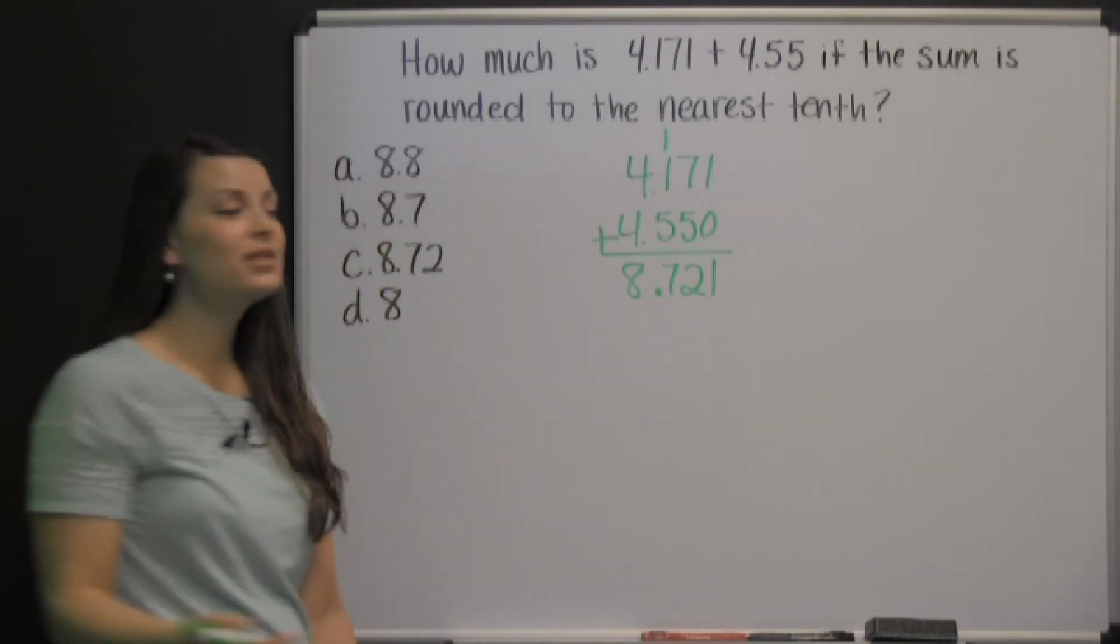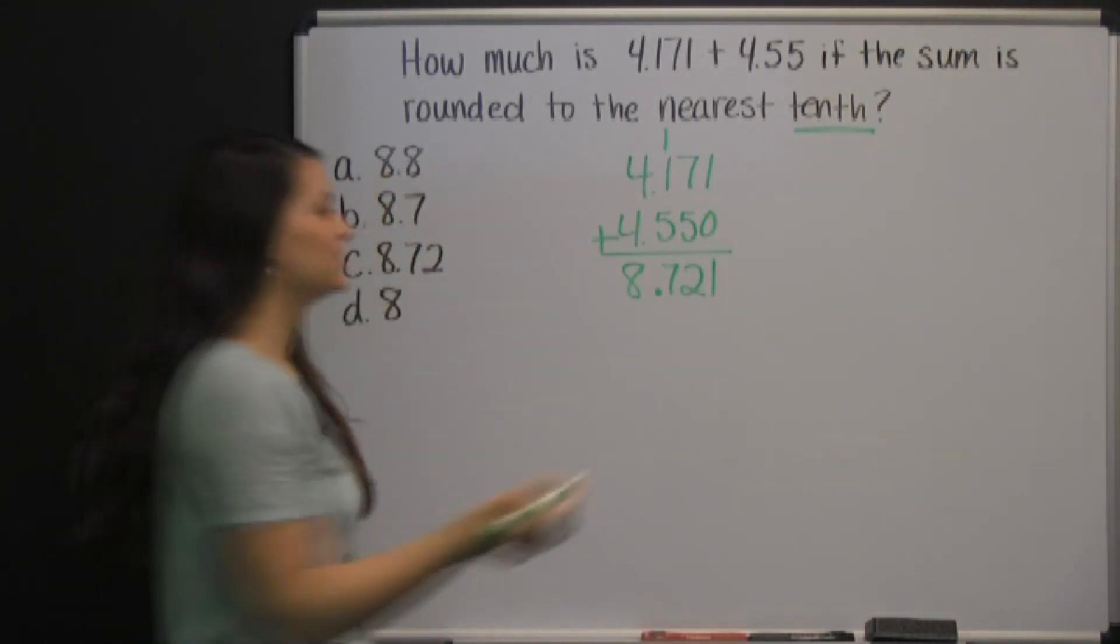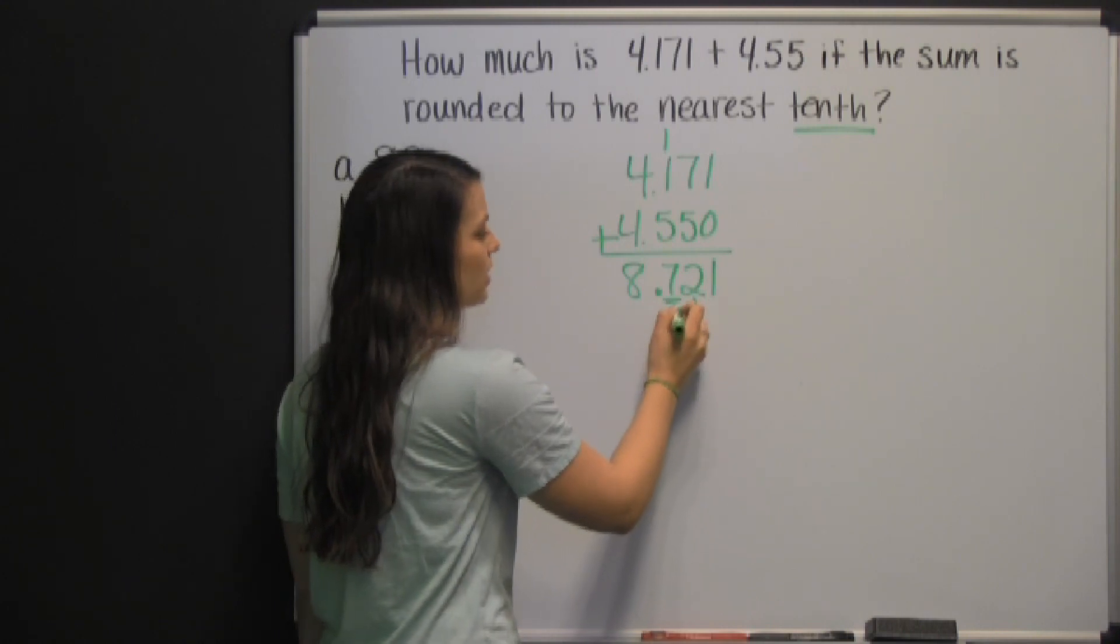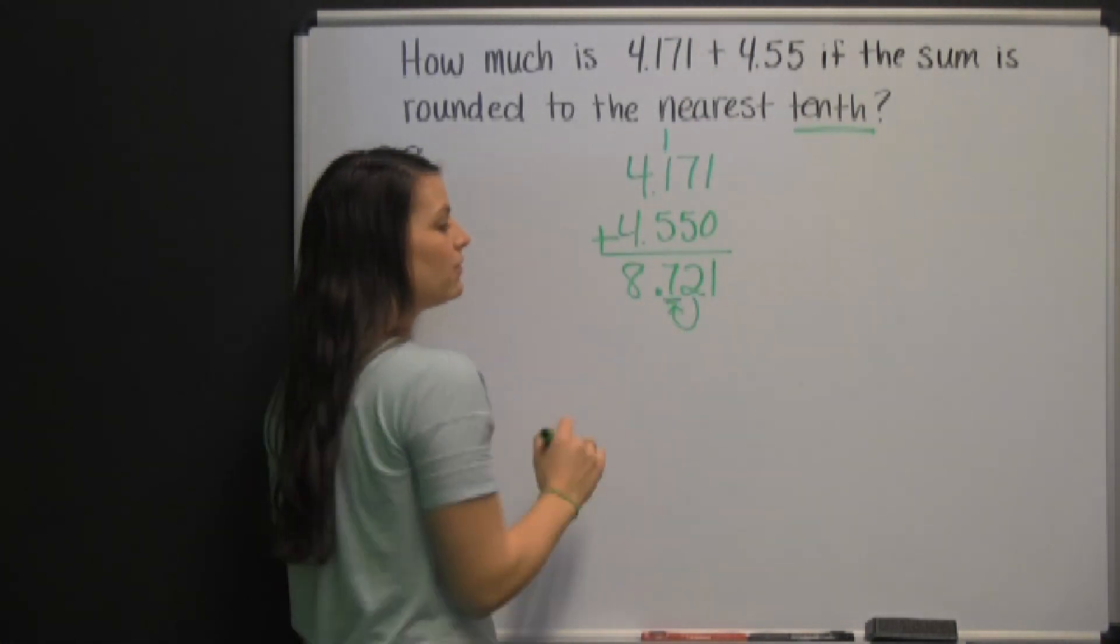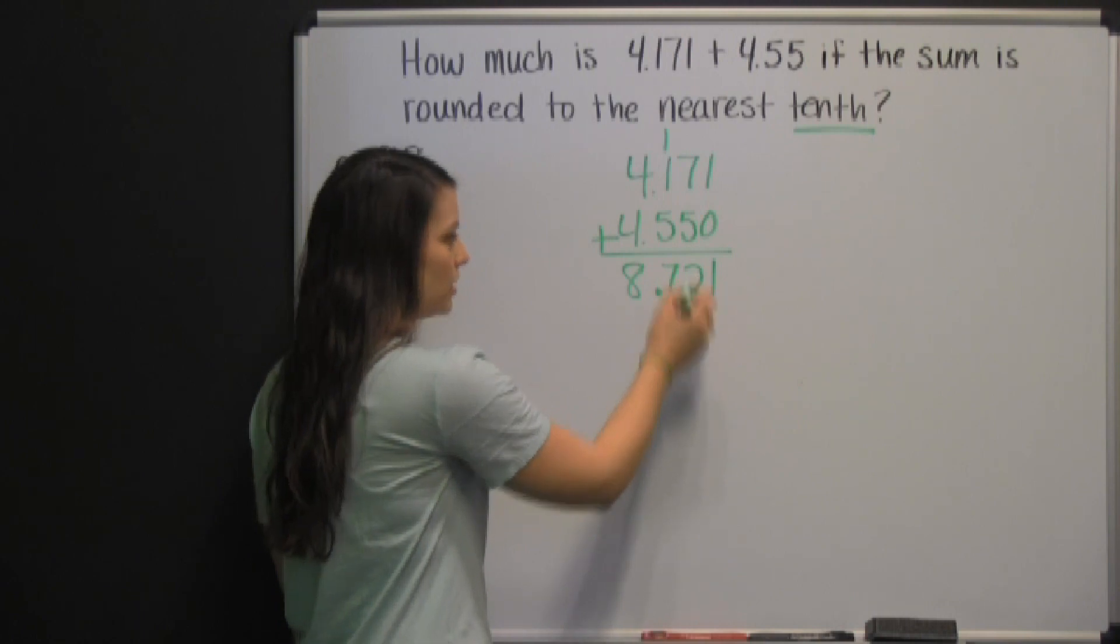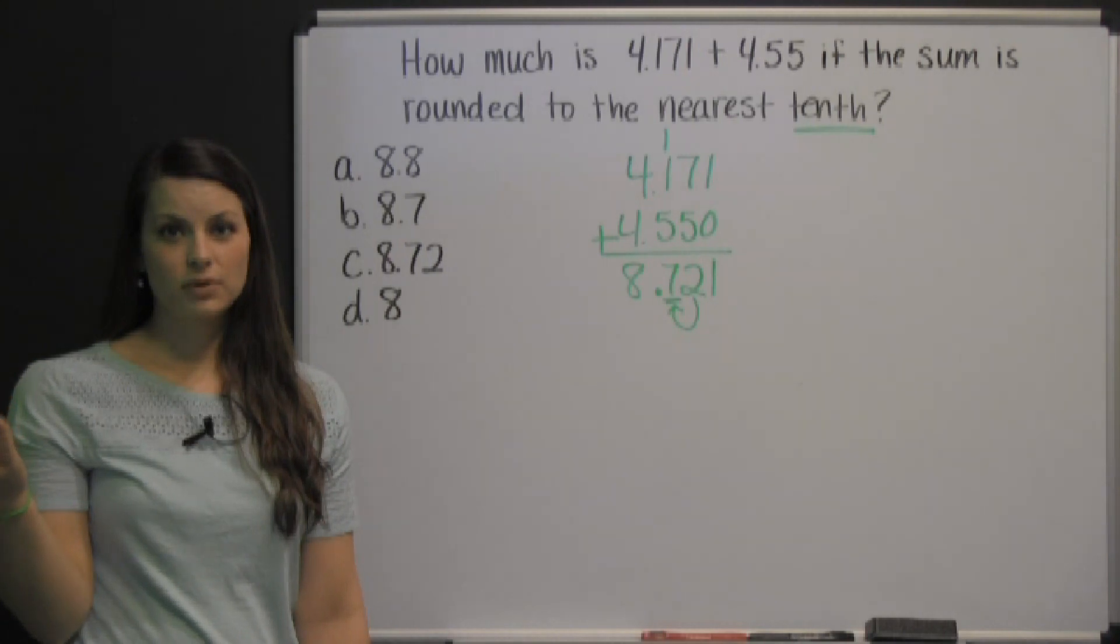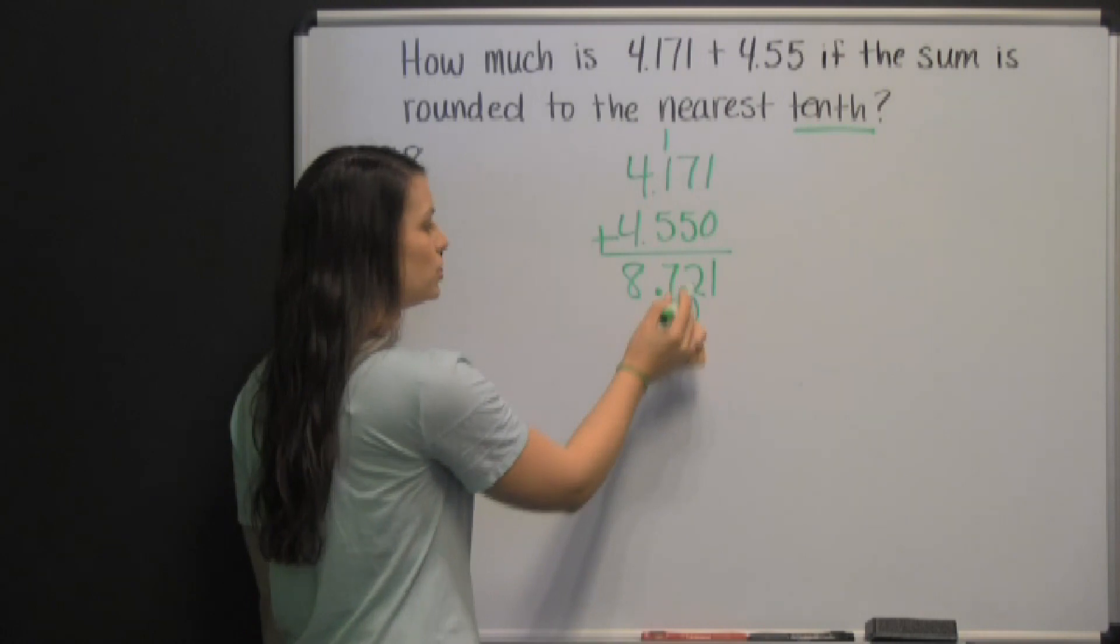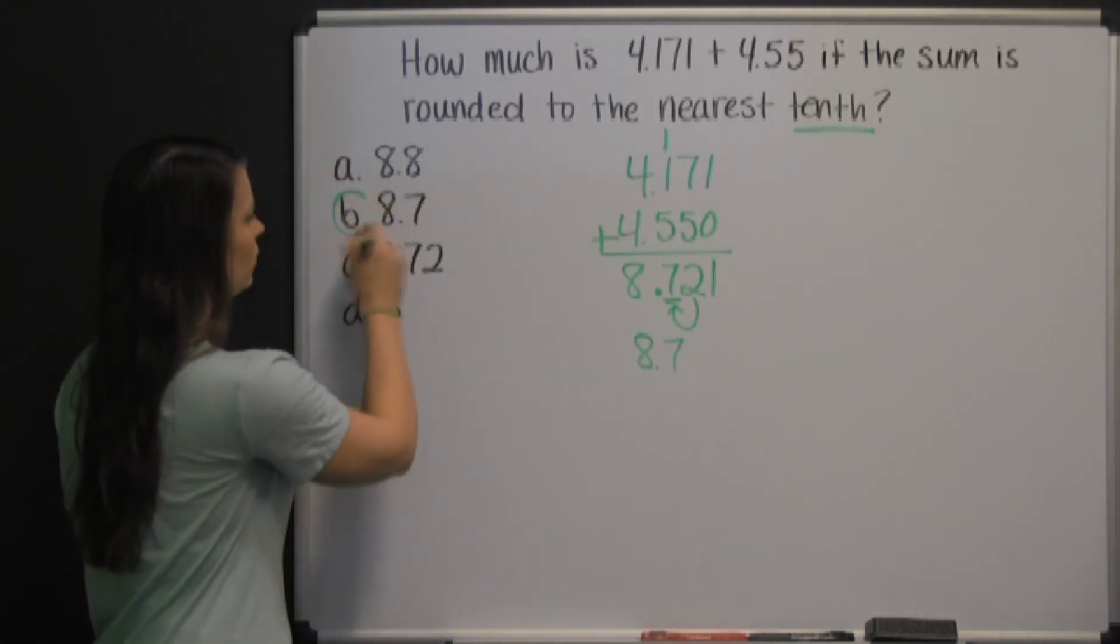The number in the tenths place is the seven. We round based on the number to the right of the place we're rounding to. The two tells the seven what to do. If the number next to the number we're rounding to is five or greater, we round up. If it's under five, we stay. The two tells the seven to stay, so it's simply 8.7, or B.